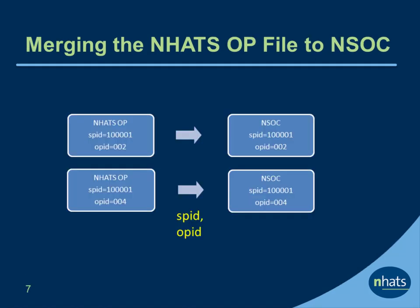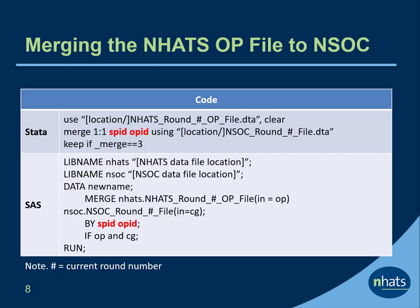In the next example, we want to merge the NHATS OP file to NSOC so we can bring over information on what the NHATS SP reported about the caregiver, and then keep only matched records. In this case, we are merging one OP-level file to another, so we use SPID and OPID in a 1-to-1 merge. Here we have illustrated Stata and SAS code for merging the NHATS OP file to NSOC. You can see we use SPID and OPID as the merging variables as shown in red, and it is a 1-to-1 merge in Stata. We also only keep cases that have a match.